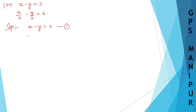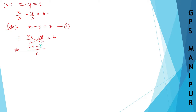The second equation is x divided by 3 minus y divided by 2 is equal to 6. First, take the LCM of 3 and 2 — multiply 3 and 2 to get 6 — and do cross multiplication. 2 into x gives 2x, and 3 into y gives 3y. So we get 2x plus 3y.